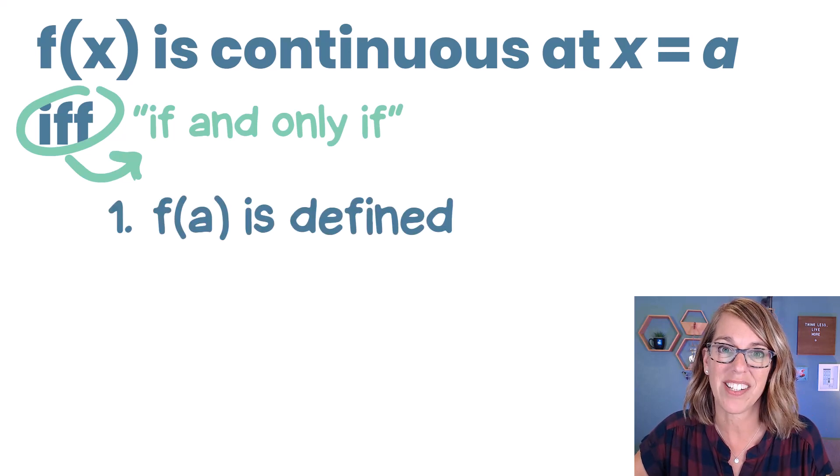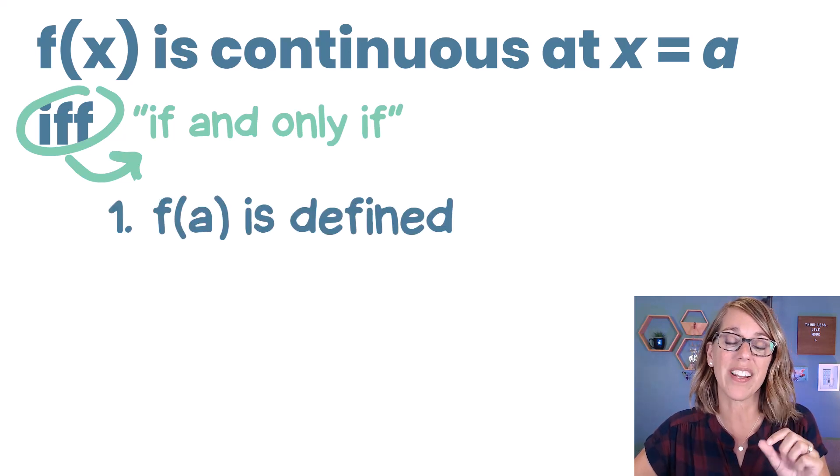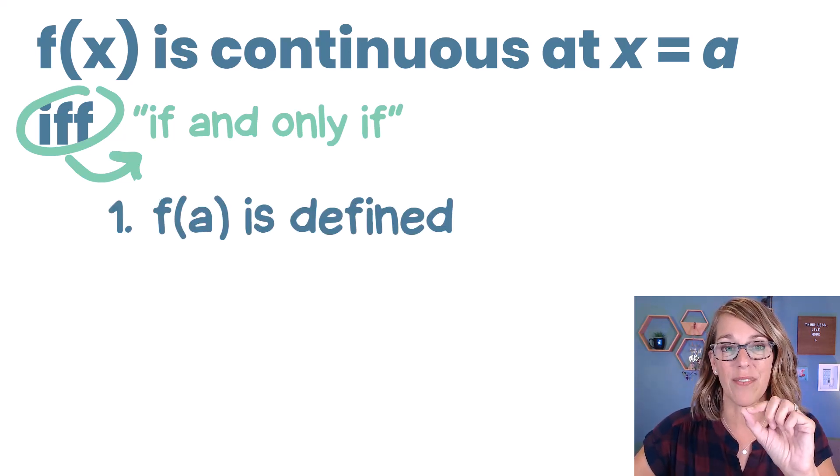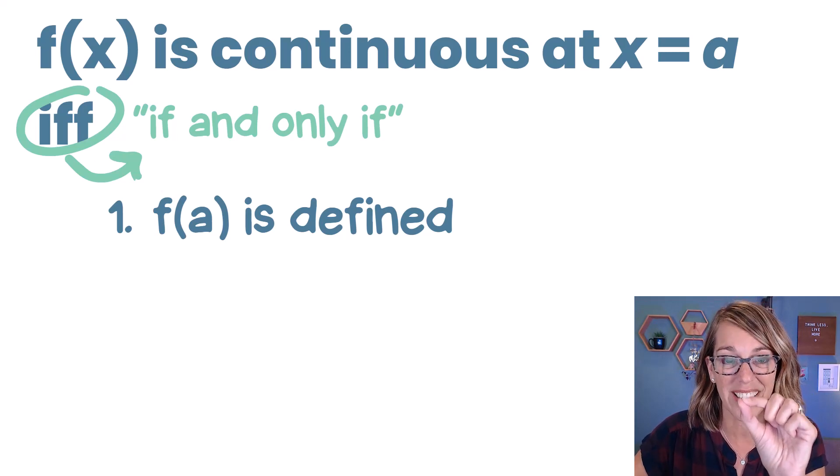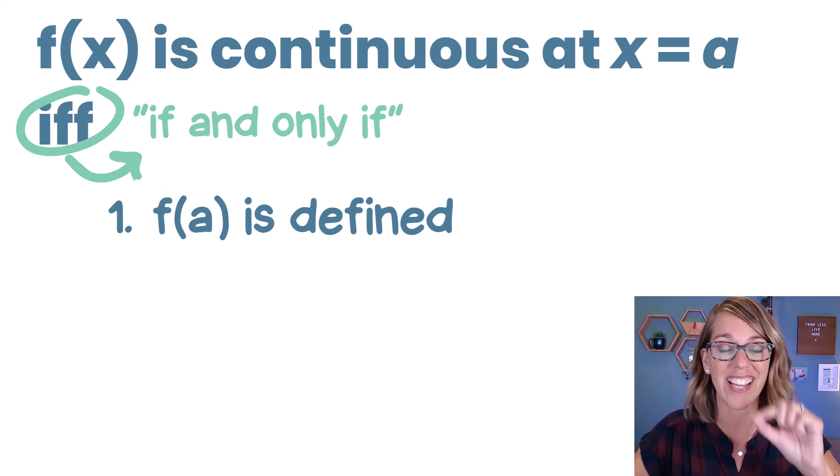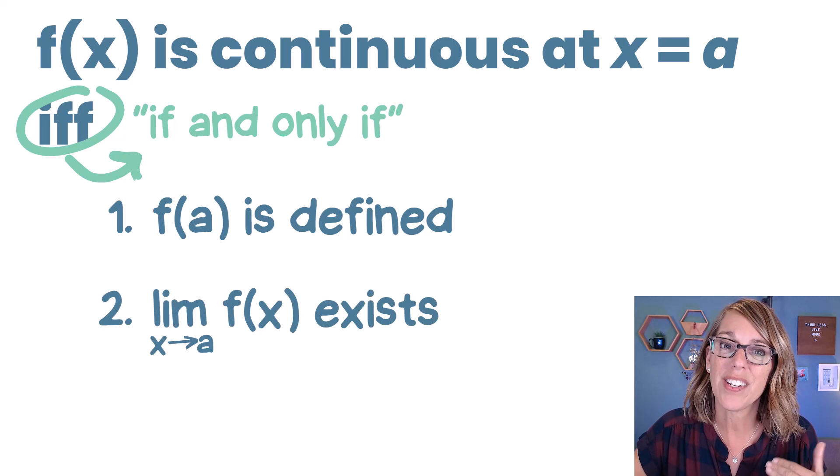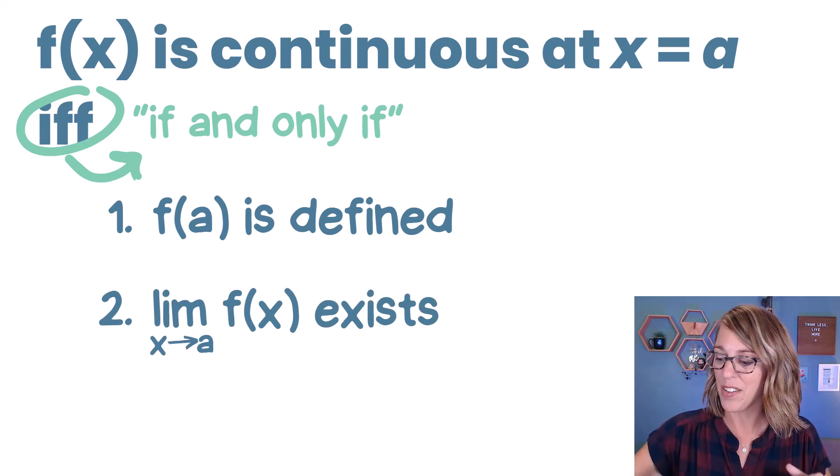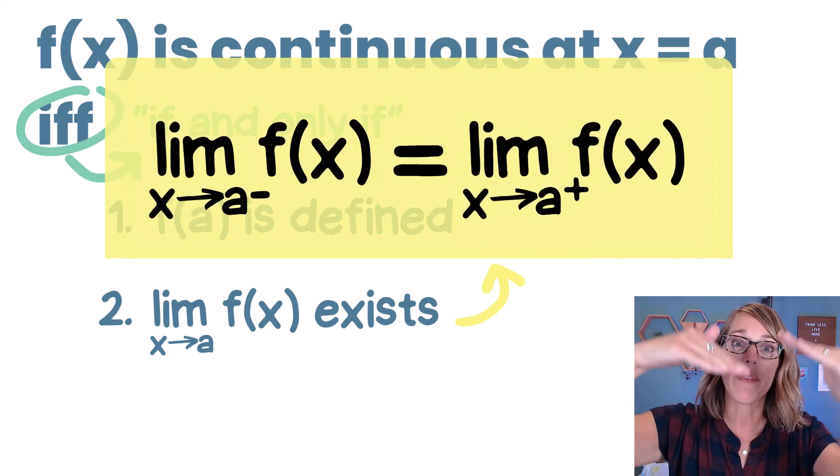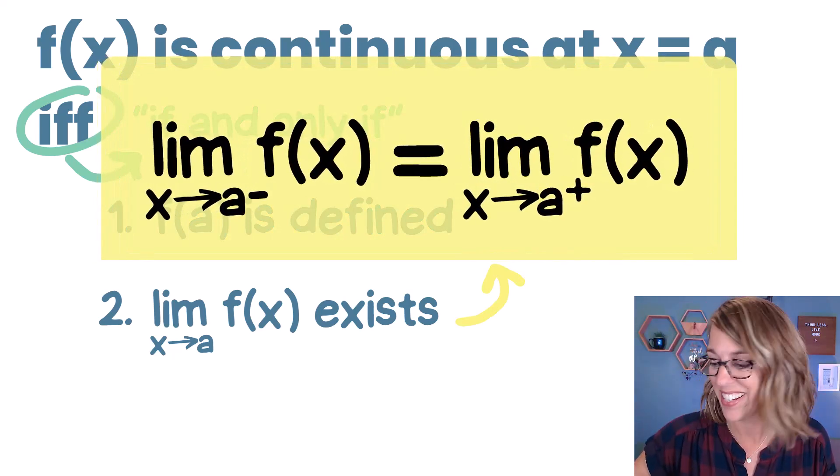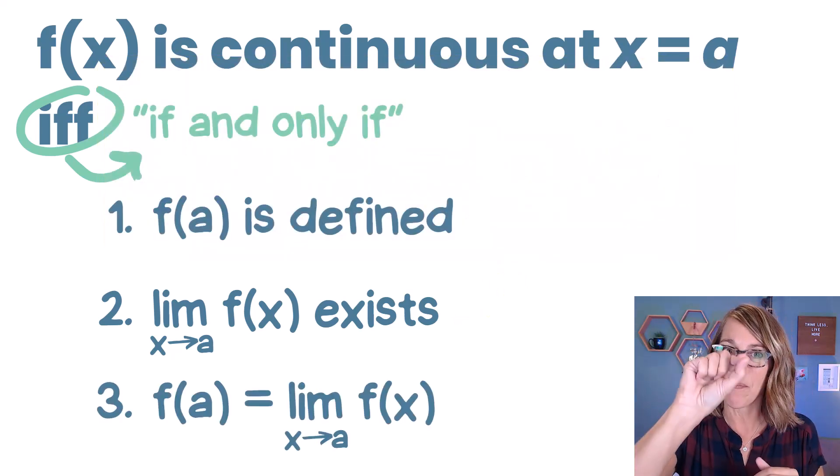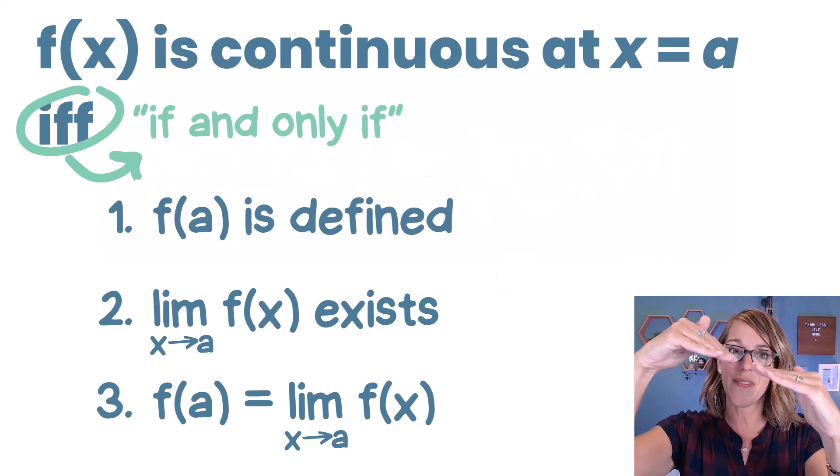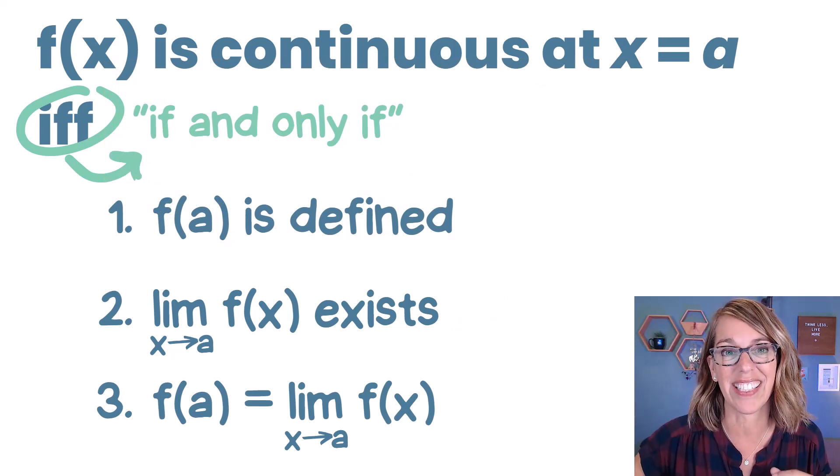This function f(x) is continuous at an x value or at a point, x equals a, if and only if we've got three conditions that we need to satisfy. The first one is that f(a) is defined. There's a point at this x value where we're analyzing continuity. We also need the limit to exist at a, not to have two different values, but to be the same left and right. And then finally, I need that point to be the same value as that limit.